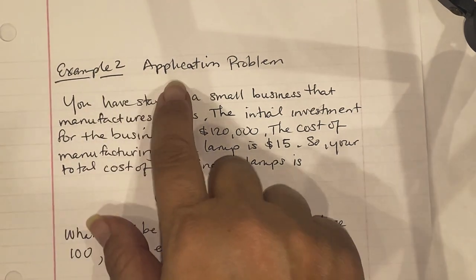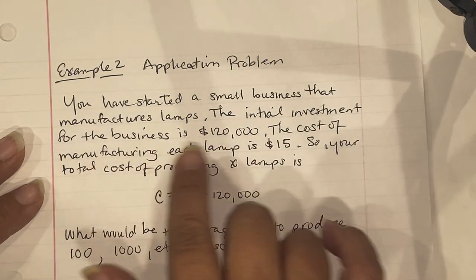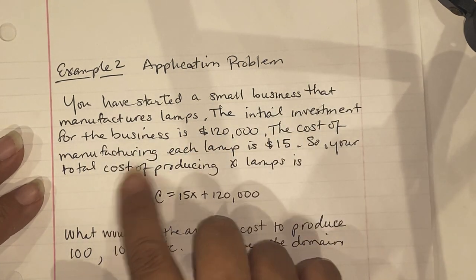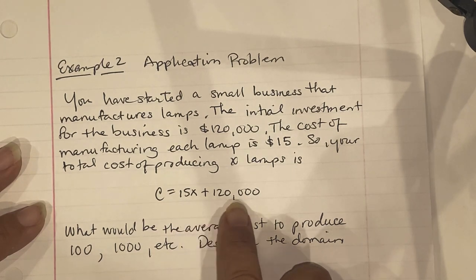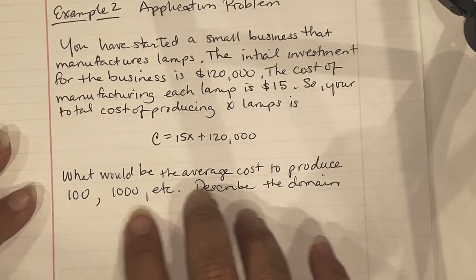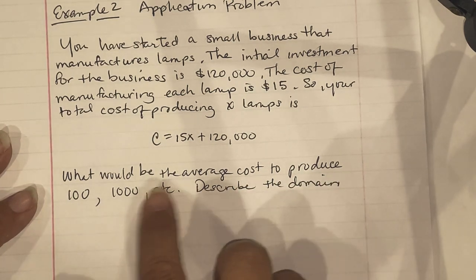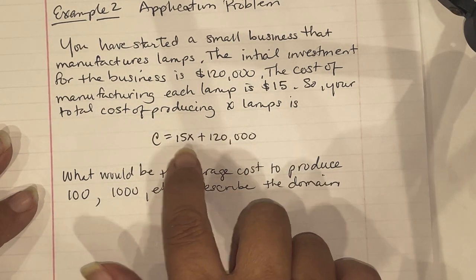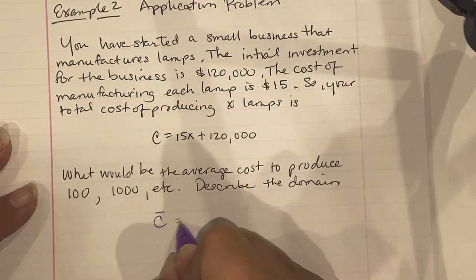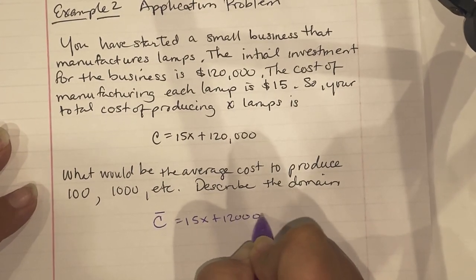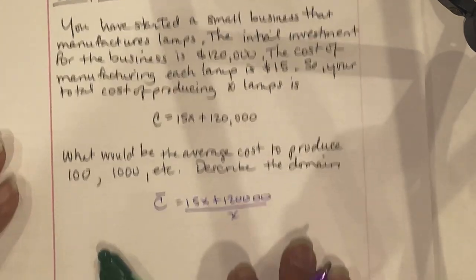Example 2 is an application problem. You've started a small business manufacturing lamps. The initial investment is $120,000 and the cost per lamp is $15, so total cost is c equals 15x plus 120,000. To find average cost, rewrite as c-average equals 15x plus 120,000 divided by x.